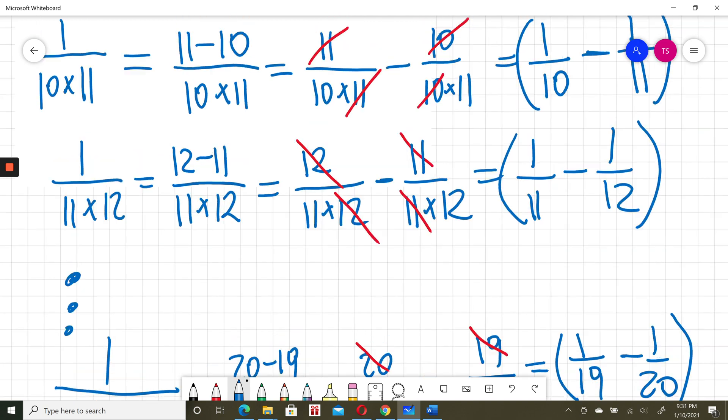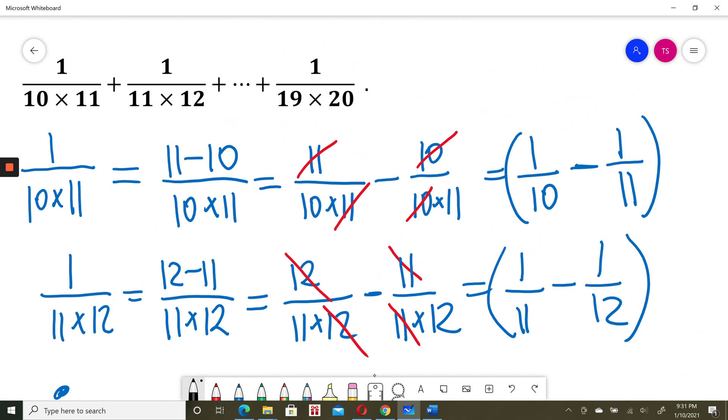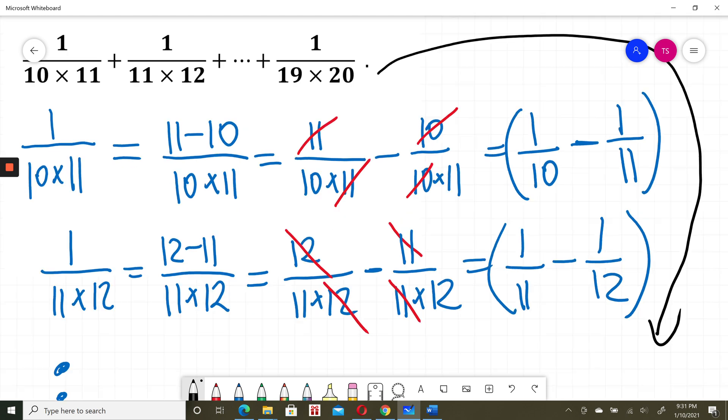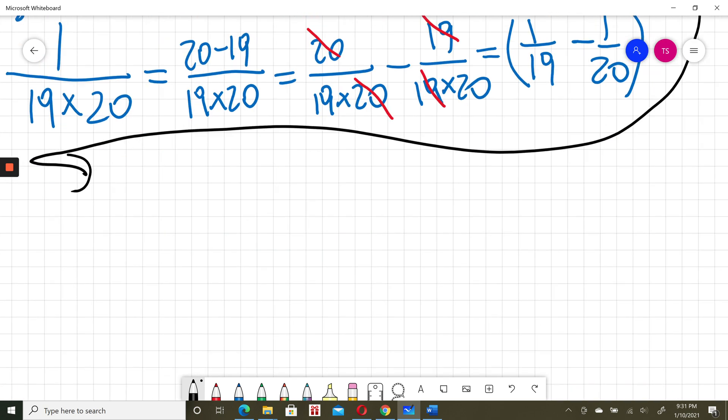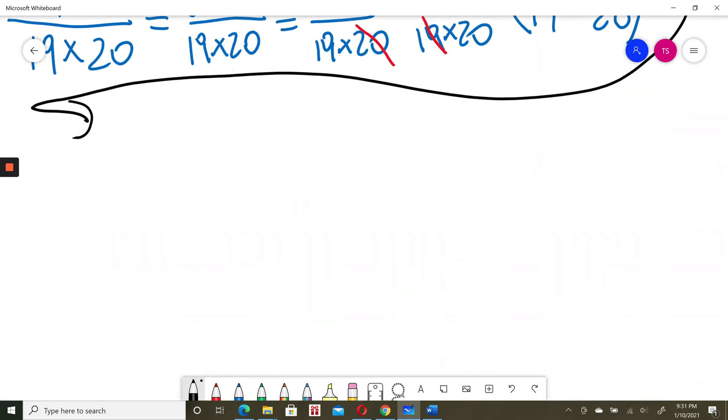So now I'm coming back to my sum, beginning of the question. I'm coming back here with that question. So now my sum will be equal to 1 divided by 10 minus 1 divided by 11. I also calculated the second term: 1 over 11 minus 1 over 12.